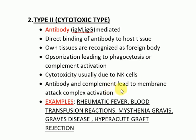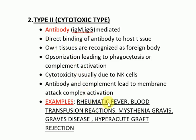Antibody and complement lead to membrane attack complex activation. When tissues are recognized as foreign bodies and there is opsonization, cytotoxicity, and complement activation, we categorize it as Type 2 hypersensitivity. Examples are rheumatic fever, blood transfusion reactions, myasthenia gravis, Graves' disease, and hyperacute graft rejection.